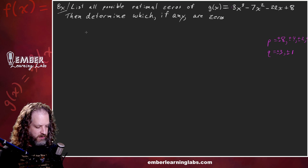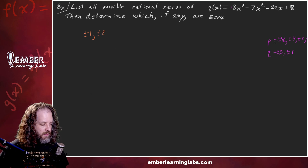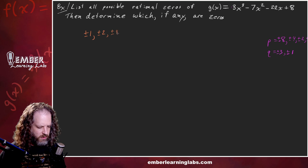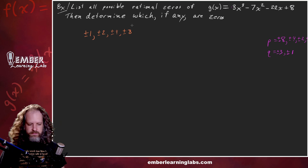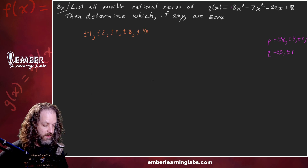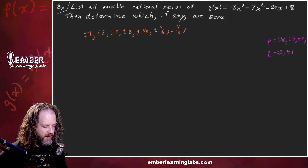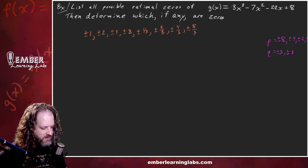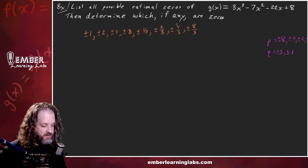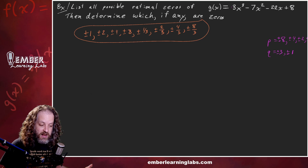All possible p over q values in numerical order: plus or minus one, plus or minus two, plus or minus four, plus or minus eight — those are from dividing by one. Then dividing by three gives plus or minus one-third, plus or minus four-thirds, and plus or minus eight-thirds. Watch out — some of the actual zeros on the homework might be the fraction ones. If any fractions reduced, you'd want to simplify them, but none of these do.